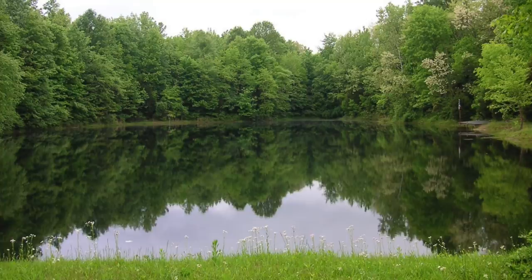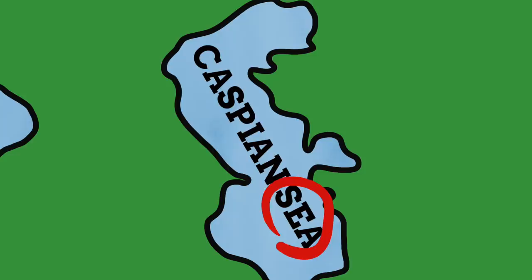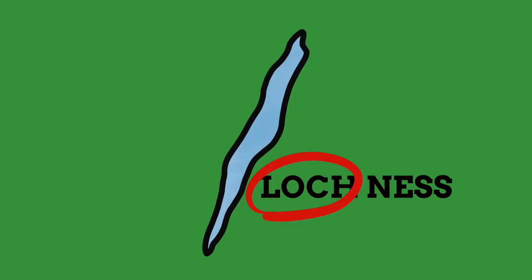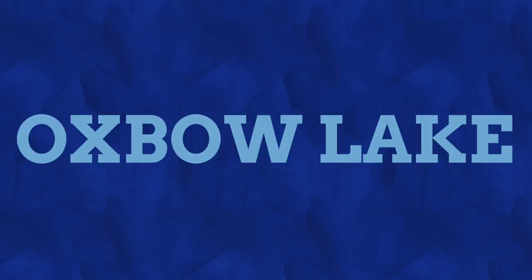Next up we have lakes, simply defined as a body of water surrounded by land. They can vary greatly in size, from pretty small things to huge ones like Lake Superior. They are also freshwater, hence why things like the Caspian Sea and the Black Sea are considered inland seas, as they have somewhat salty water. Lake comes from the Latin word lacus. It's also good to mention lochs, which is a regional dialect term for lakes, mostly seen in Scotland and Ireland — Loch Ness being an example.